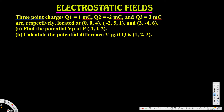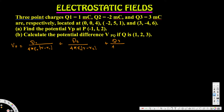For Part A, we calculate VP using the superposition formula. Since we have three charges, VP = q1 / (4πε₀|r - r1|) + q2 / (4πε₀|r - r2|) + q3 / (4πε₀|r - r3|), where r is the field point and r1, r2, r3 are the locations of each charge. This is the equation we are going to use.